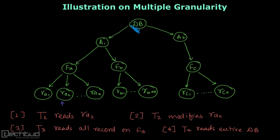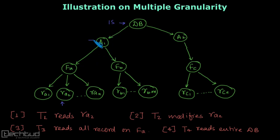It starts with the database, and here, since there is no lock, it will obtain an intention shared lock. It indicates that at a lower level, shared lock is obtained explicitly. This one will again obtain an intention shared lock, here it will obtain intention shared again, and then finally at this level it will obtain a shared lock and then perform the read operation.